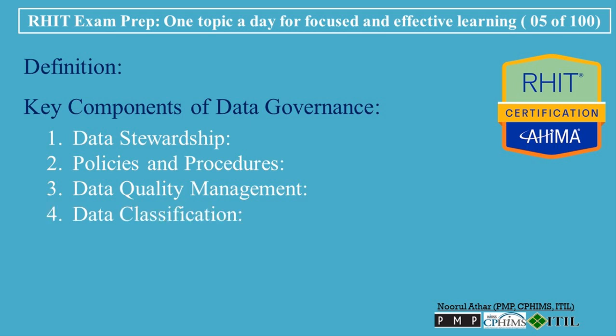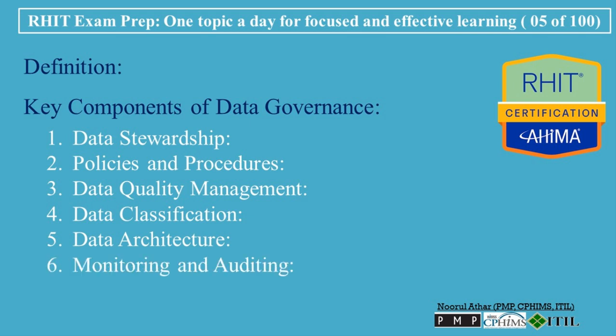4. Data Classification — classifying data based on its sensitivity and importance helps organizations implement appropriate security measures. Sensitive data requires stricter access controls and protections. 5. Data Architecture — a well-defined data architecture outlines how data is organized, integrated, and utilized within the organization. It provides a framework for data management and governance practices. 6. Monitoring and Auditing — regular monitoring and auditing of data governance practices are essential for ensuring compliance and identifying areas for improvement. This can involve tracking data access, usage, and adherence to policies.